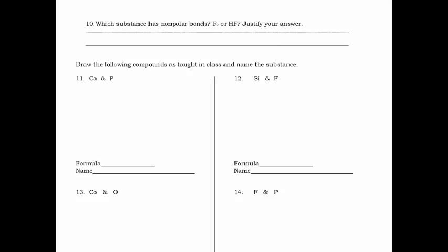Last short-answer question: which substance has nonpolar bonds? Nonpolar bonds mean two of the same non-metal, so it's a diatomic. HF is two different non-metals, so that's not the answer. The answer is F2. A nonpolar bond means they share electrons equally — you can say that, or say it's two of the same non-metal. You'll have two choices for your justification.